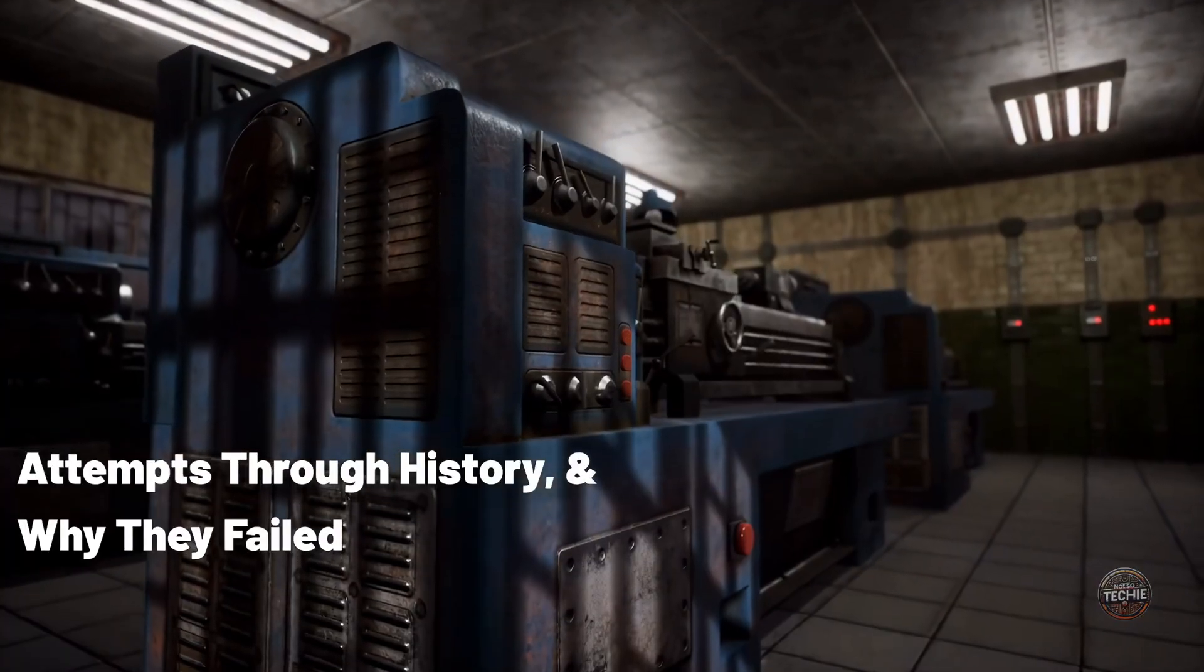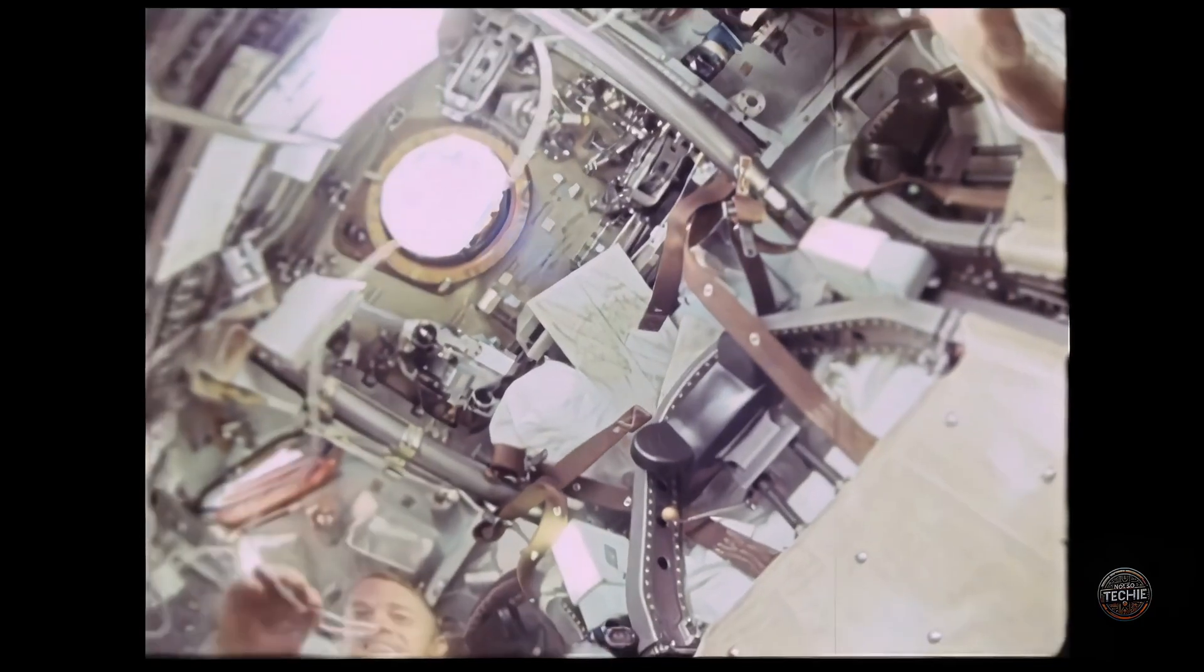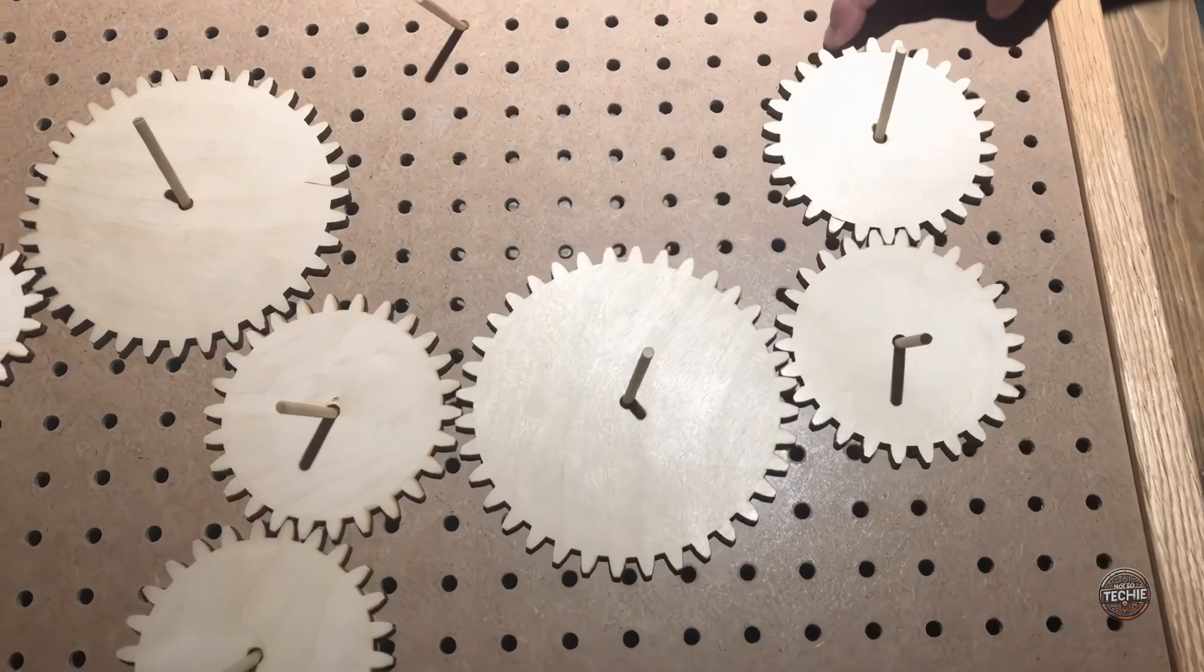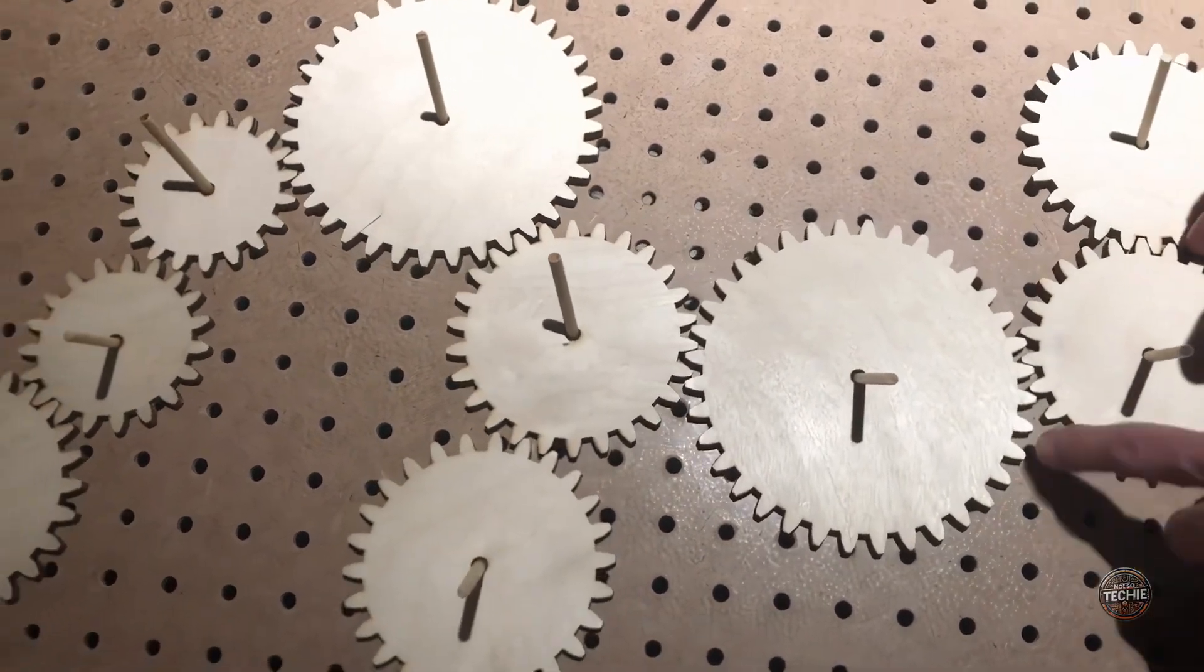Attempts through history, and why they failed. Throughout history, we see countless examples of inventors trying and failing to build a perpetual motion machine. From Brahmagupta's rotating wheel to Leonardo da Vinci sketches, the dream persisted.